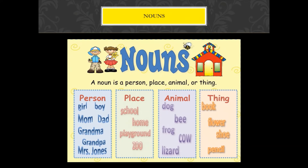What is a noun? A noun is a name of a person, place, animal, or thing. A person — it can be a boy, a girl, your mom, your dad, grandma, grandpa, Mrs. Jones who is your neighbor. Or a place — your school, your home, your playground.